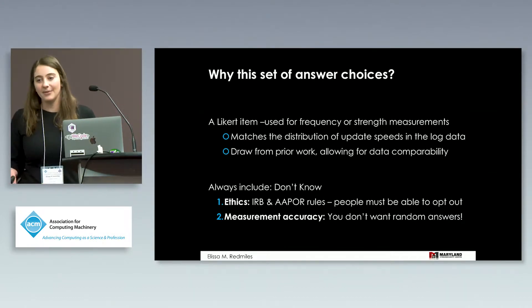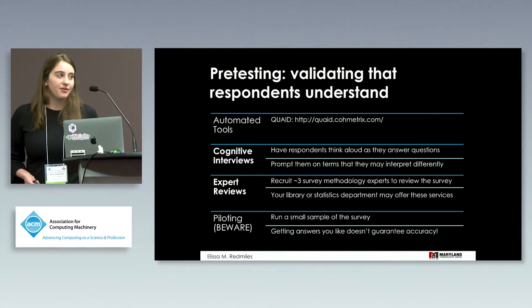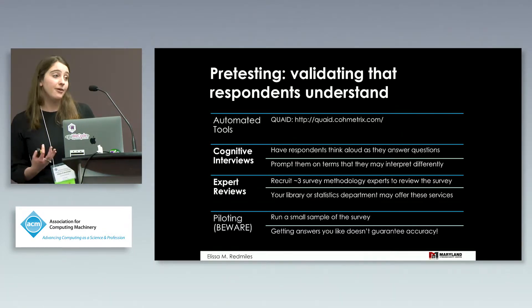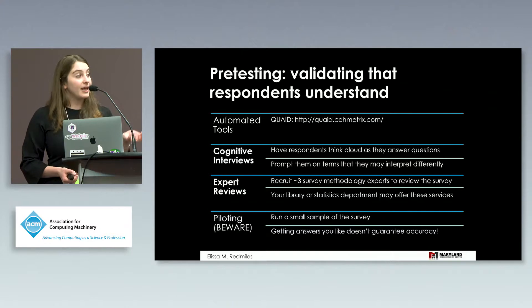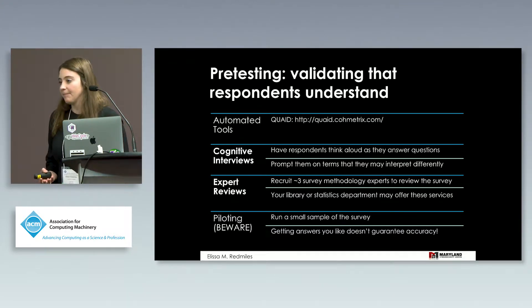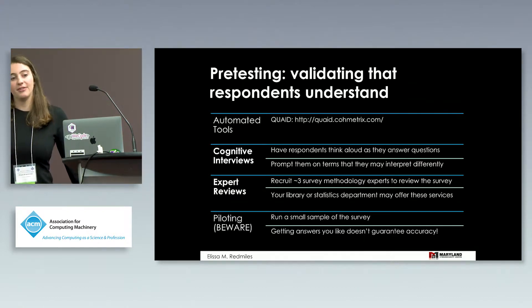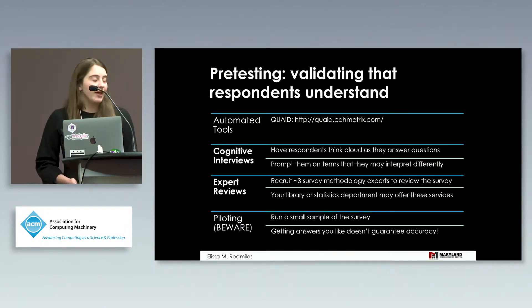Based on ethics rules for surveys and IRBs, you're supposed to allow people to opt out, and we also pre-tested our survey before deploying it. Methods for pre-testing include using automated tools to assess readability, and cognitive interviews where you ask people to think aloud as they go through the survey — we brought people into the lab and asked them to narrate their thought process to make sure they were interpreting items the way we intended, for example that 'within a week' meant the same thing to everyone. We also had experts review the survey, often found in statistics or sociology departments.